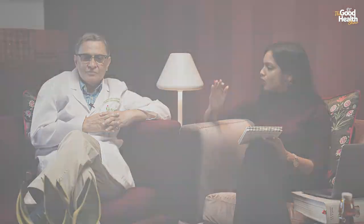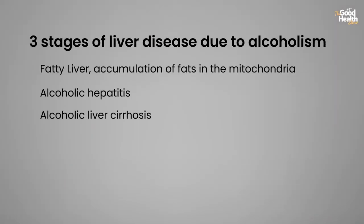So if I understand it right, there are three stages in which the liver is affected: first is the fatty liver, second would be alcoholic hepatitis, and third would be cirrhosis — if we consume it indiscreetly.